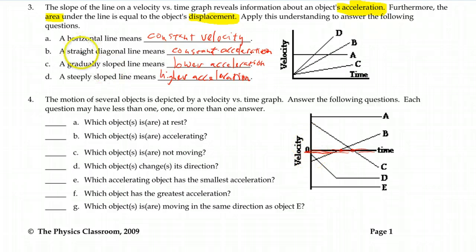So anything that touches the zero line is at rest at least for a short period. So B and C meet those criteria. They do touch the rest line at some point and therefore are at least momentarily at rest. Now a flat line doesn't mean you're at rest. It's not the same as the position time graph.